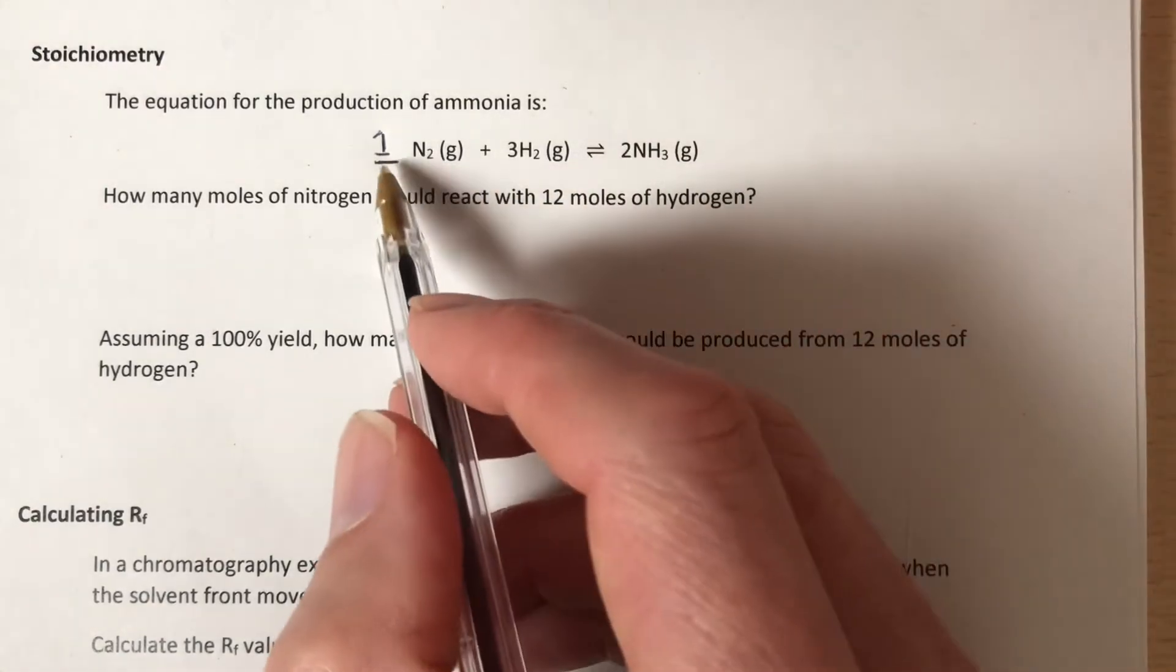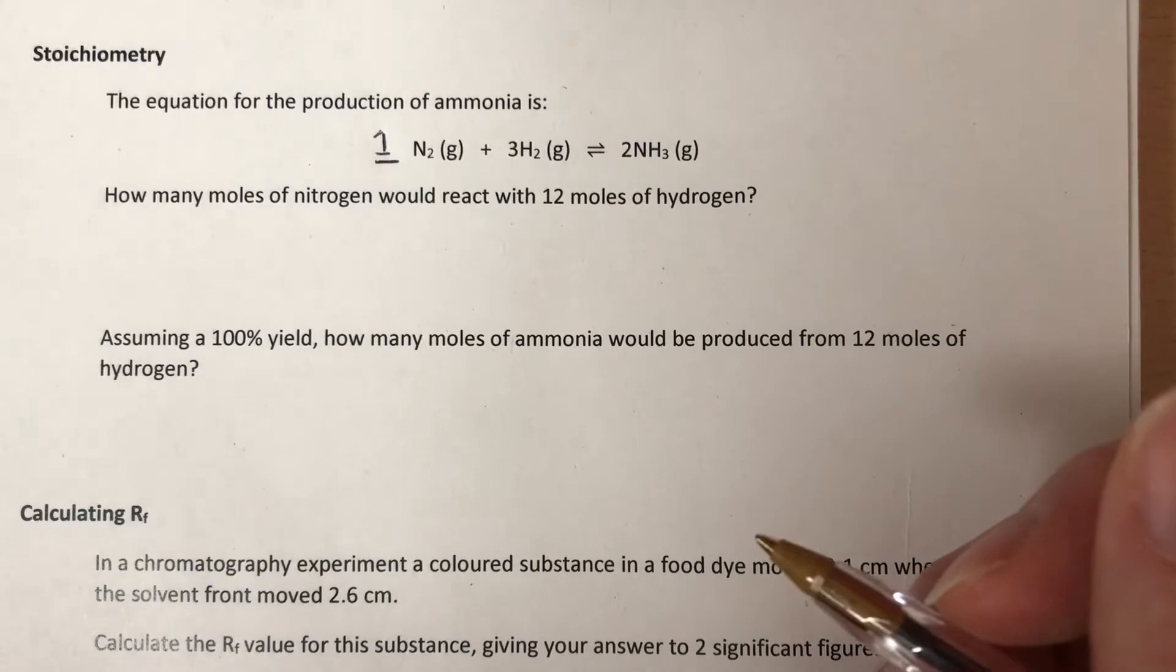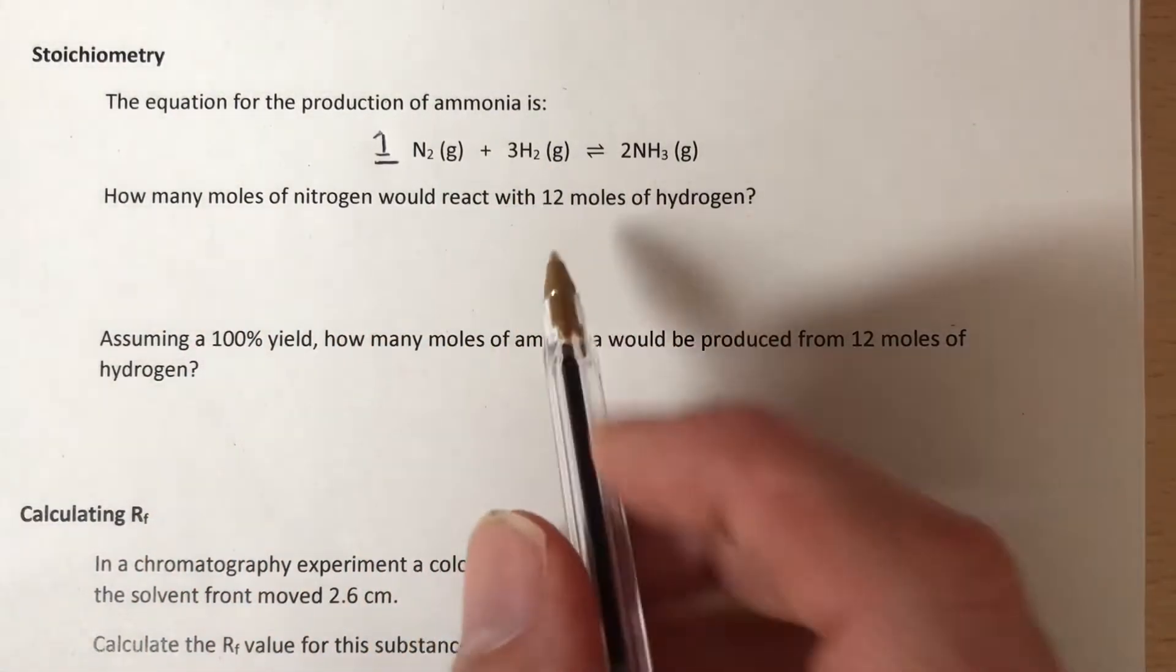Now it's very rare that we start with one mole of nitrogen, and we'll start with different numbers of reactants. So in this question it says how many moles of nitrogen would react with 12 moles of hydrogen?